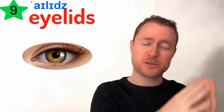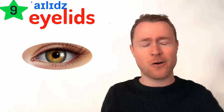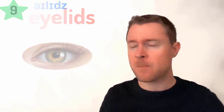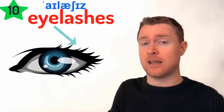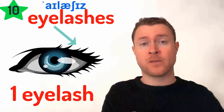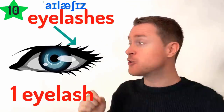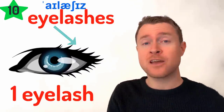Then you have your eyelids — one eyelid, two eyelids. Your eyelids are what close at night when you want to go to sleep. You can open your eyelid or close your eyelids. And then right on the end of your eyelids, you have your eyelashes. One eyelash, but many eyelashes. On the edge of your eyelids are your eyelashes. Practice with me: eyelash and eyelashes, eyelid and eyelids.